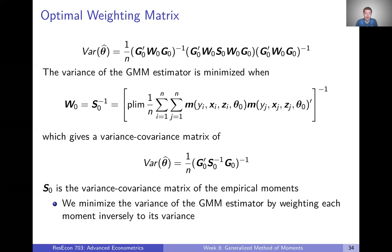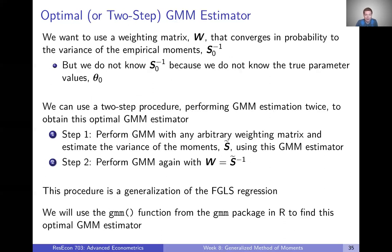The intuition here is that S₀ is essentially the variance-covariance matrix of all our empirical moments, and we weight by its inverse. We minimize the variance of our GMM estimator by weighting each moment inversely proportional to its variance — up-weighting moments with low variance and down-weighting moments with high variance, effectively putting more weight on more precise moments and less weight on less precise ones.